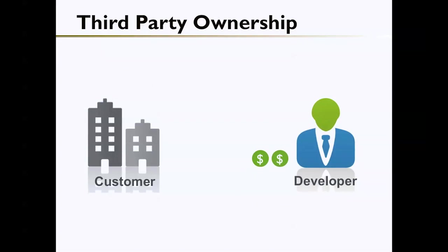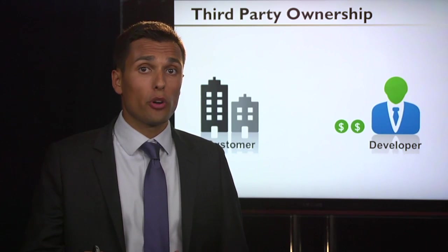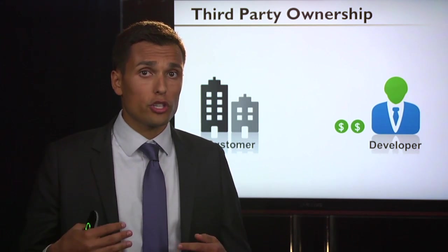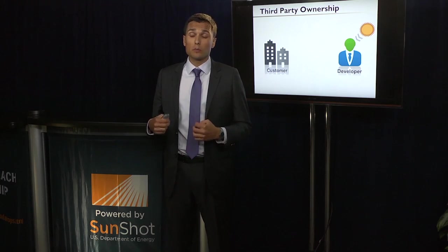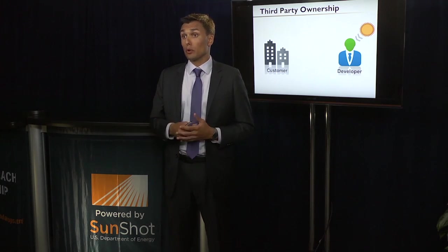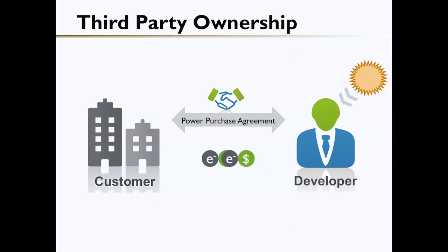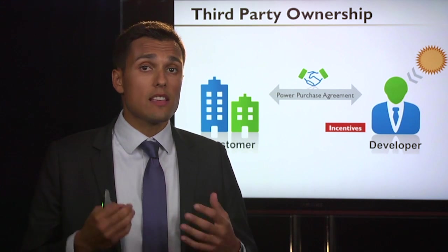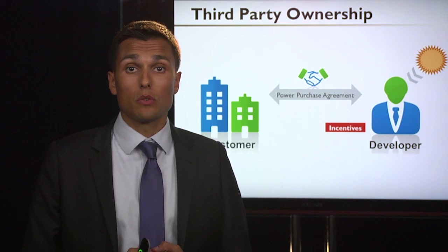The next ownership structure is third-party ownership. In this case, the developer, rather than the customer, puts up the upfront capital to purchase, own, and operate the system. The developer pays for all the equipment and actually owns the systems, even if the system is on the customer's roof. The customer then enters into a power purchase agreement — or possibly a lease agreement — to receive electricity from the system at a predetermined price. Importantly, the developer takes the incentives, including renewable energy credits and tax credits.